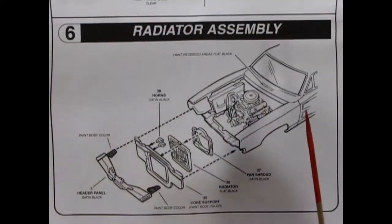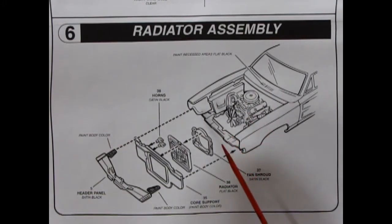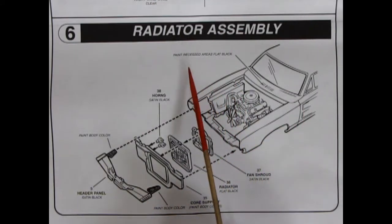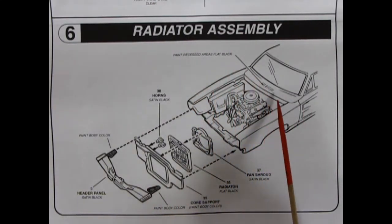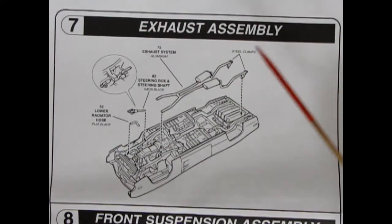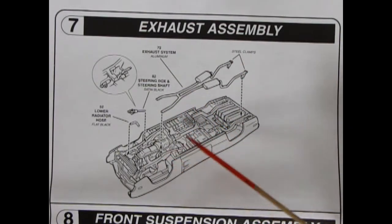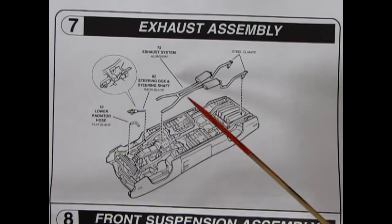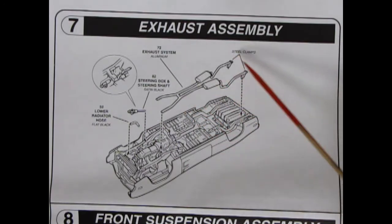Panel six shows our radiator assembly and as you can see here it's a multi-piece affair with the horns. So we've got a fan shroud, our radiator, the two horns, the core support and the header panel up here. So that's a lot of stuff and it even says paint the recessed area up there flat black. Panel seven shows our exhaust assembly dropping in to our chassis here. You also get the steering box with the steering shaft, the lower radiator hose and these you paint aluminum with steel clamps.